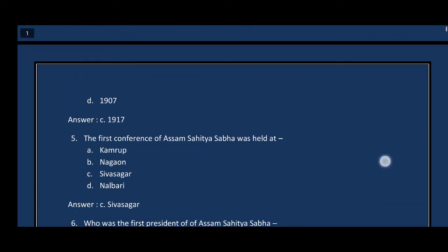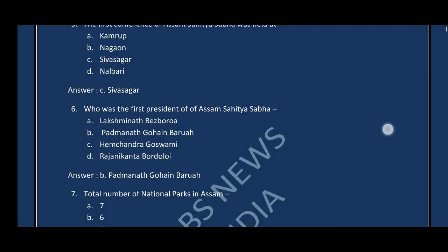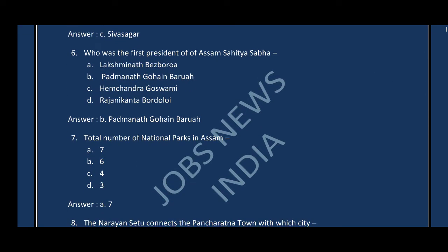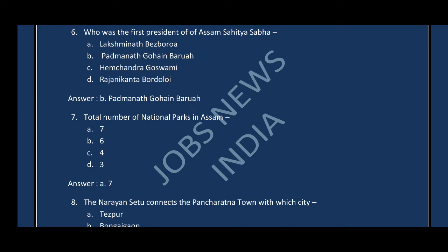Question number five: The first conference of the Assam Sahitya Sabha was held at — the correct answer is option C, Sibsagar. Question number six: Who was the first president of Assam Sahitya Sabha? The correct answer is option B, Padmanath Gohain Barua.